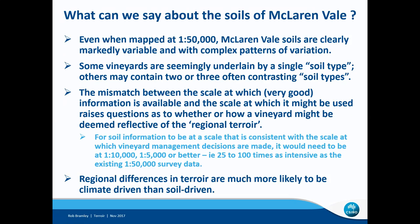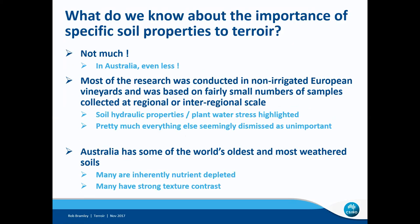So what do we actually know about the importance of specific soil properties to terroir? Unfortunately, the answer is not much — and in Australia, it's even less than not much. Most of the research that has looked at what soil contributes to terroir was conducted in non-irrigated European vineyards, particularly in France, based on fairly small numbers of samples collected within or between regions and therefore quite widely dispersed. As a consequence, the ability to define the importance of soil properties which might impact on wine composition is questionable in my view.